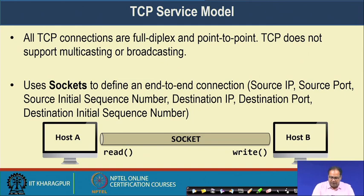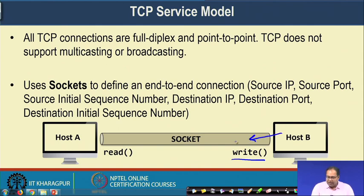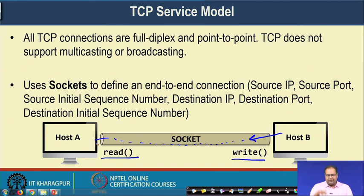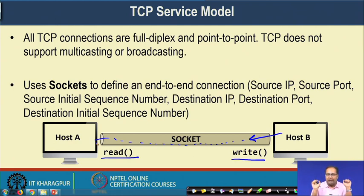A socket has 6 parameters to uniquely identify it: the source IP, source port, source initial sequence number, destination IP, destination port, and destination initial sequence number. Once host A and host B have set up a socket, host B can use the write system call to write data into the socket. This data is delivered through the protocol stack, received at the transport layer of host A, and host A executes the read call to read the data from the transport layer buffer. The reliable delivery is taken care of by the transport layer and delivery based on IP address by the network layer.